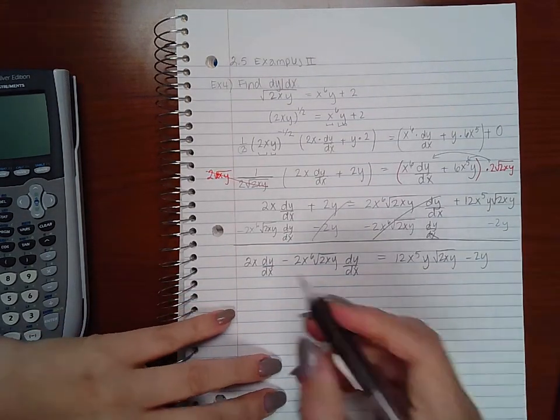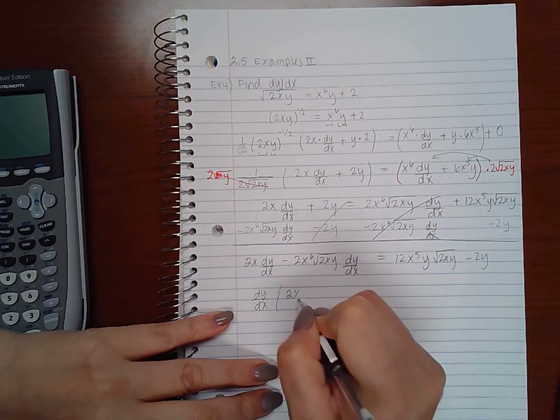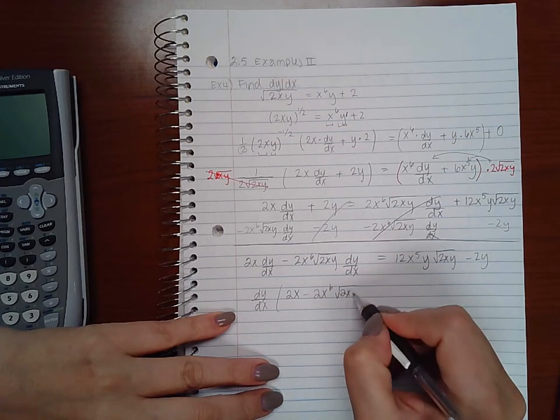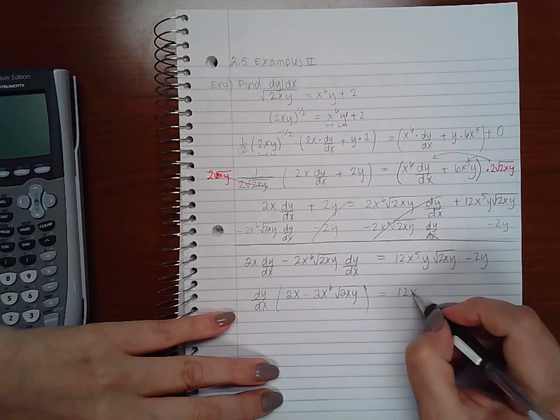Then I'm going to factor out the dy/dx on the left hand side and I'm going to rewrite the right hand side.